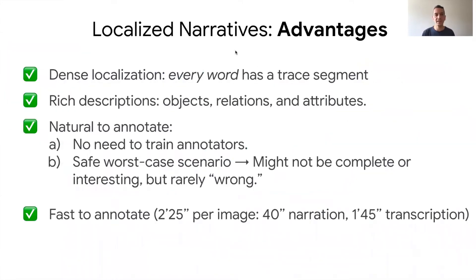Localized narratives protocol has several advantages. We get dense localization — every word has a trace segment in correspondence. We get rich descriptions with objects, relations between objects, and their attributes. Because the protocol is natural to follow, we don't need to train the annotators; they can just get going from the first hour and start producing. It also has a safe worst case scenario: the localized narrative might not always be very complete or interesting, but it's rarely wrong. It's also very fast — including narration, mouse pointer, and manual transcription, it's only about two and a half minutes per image, so it scales well.